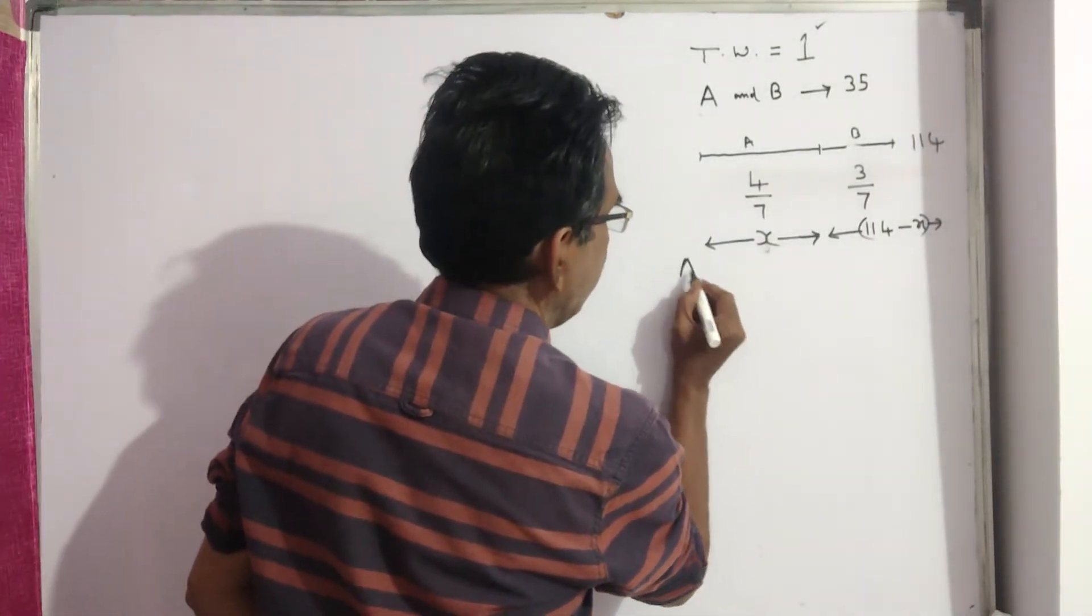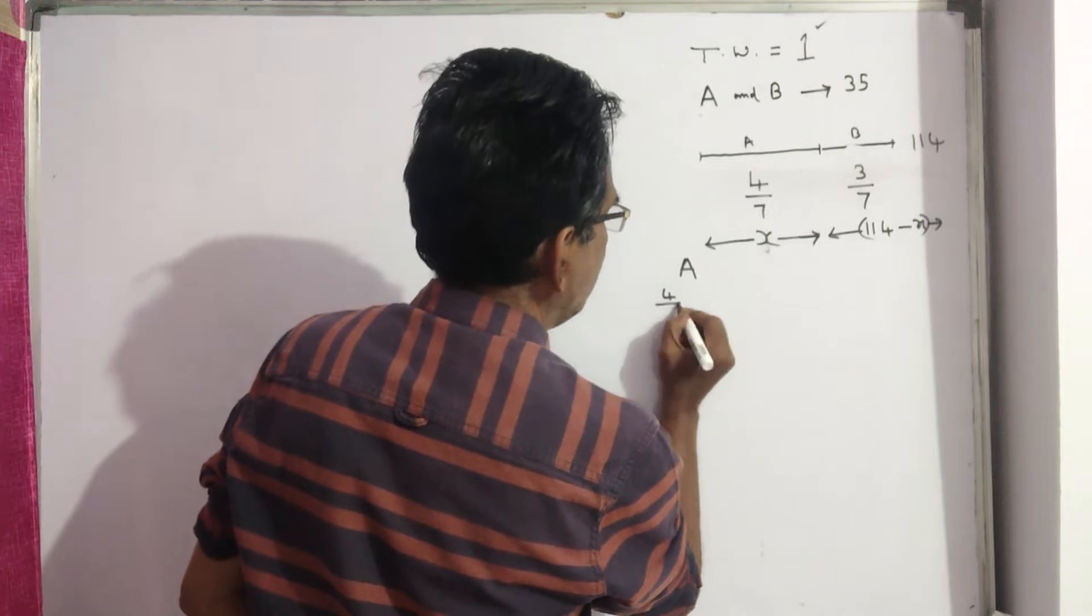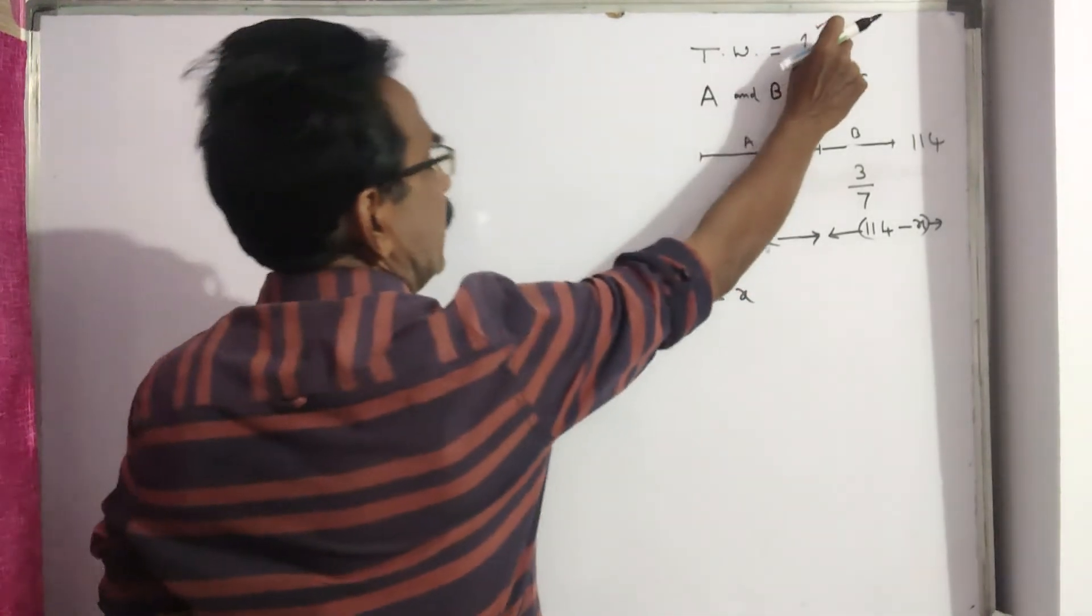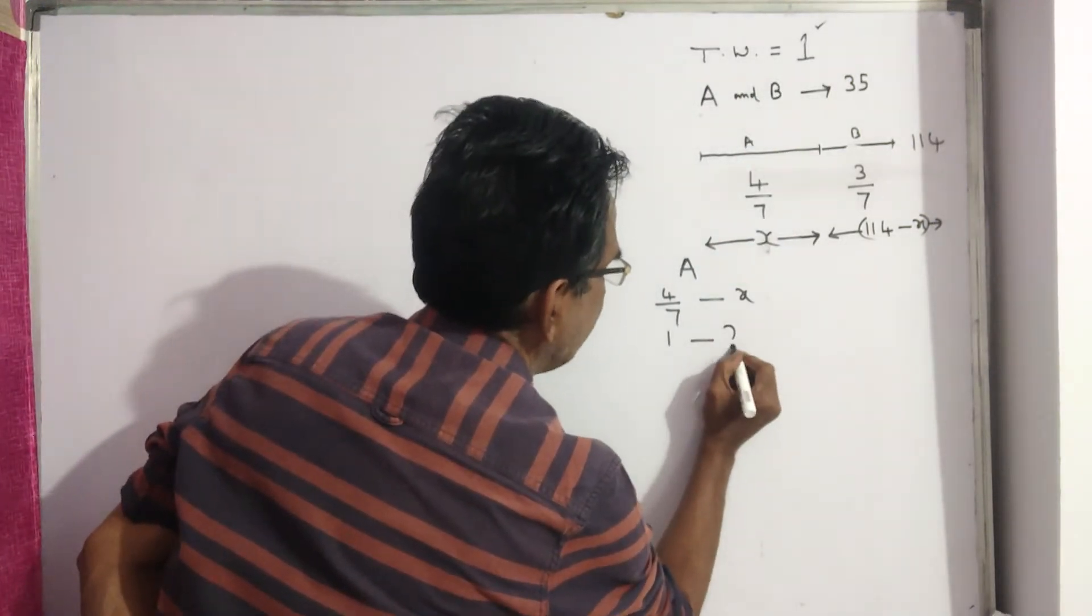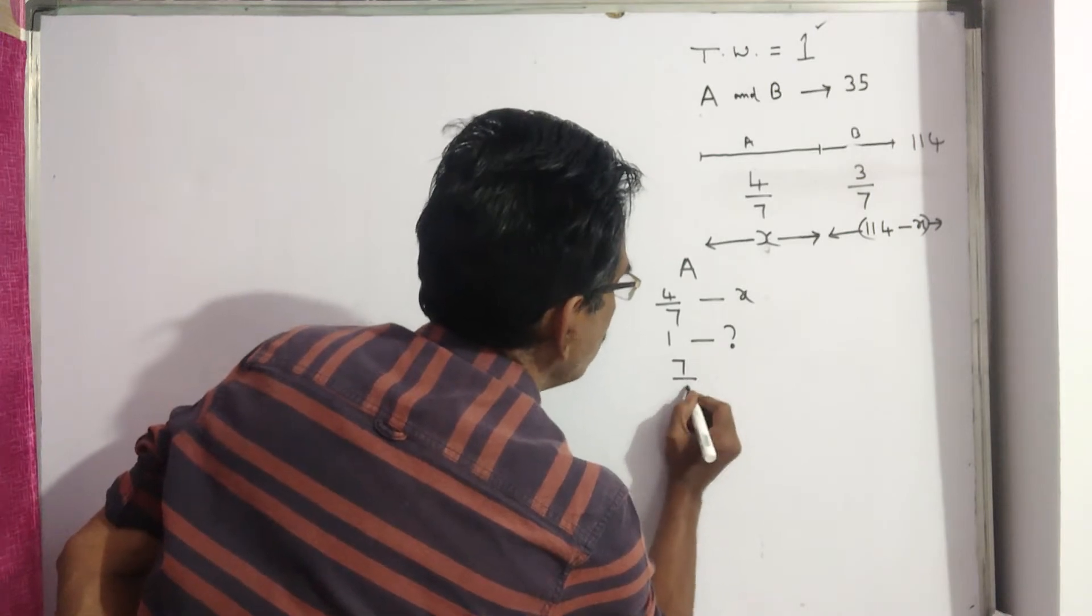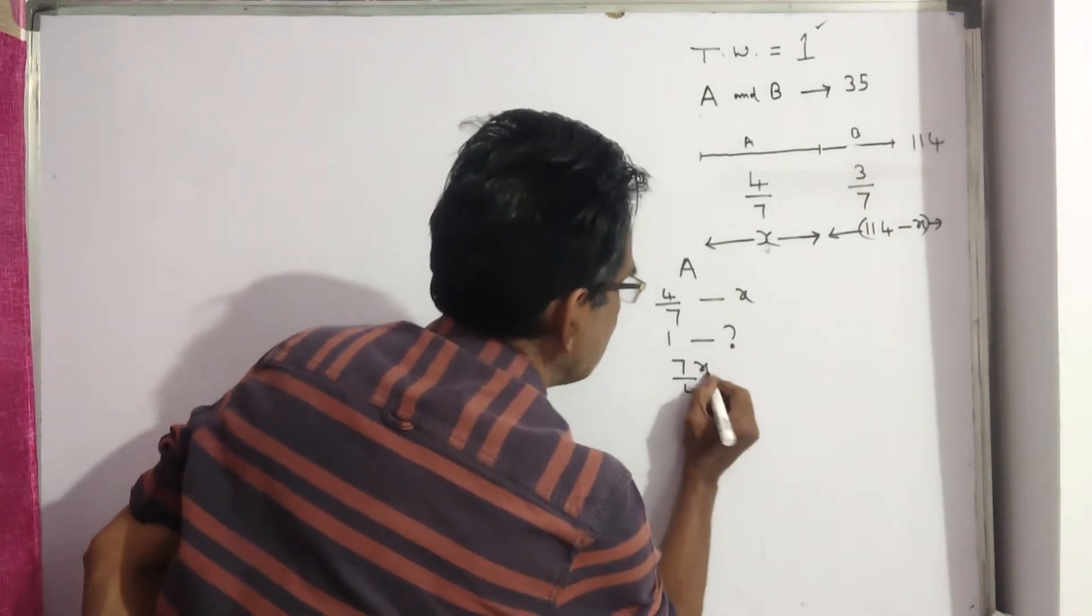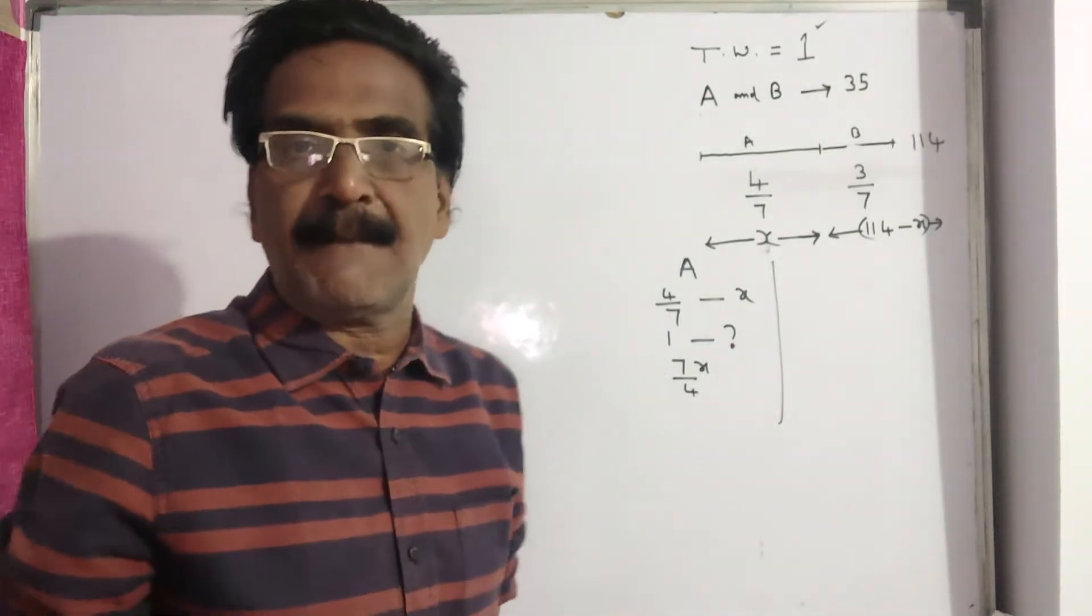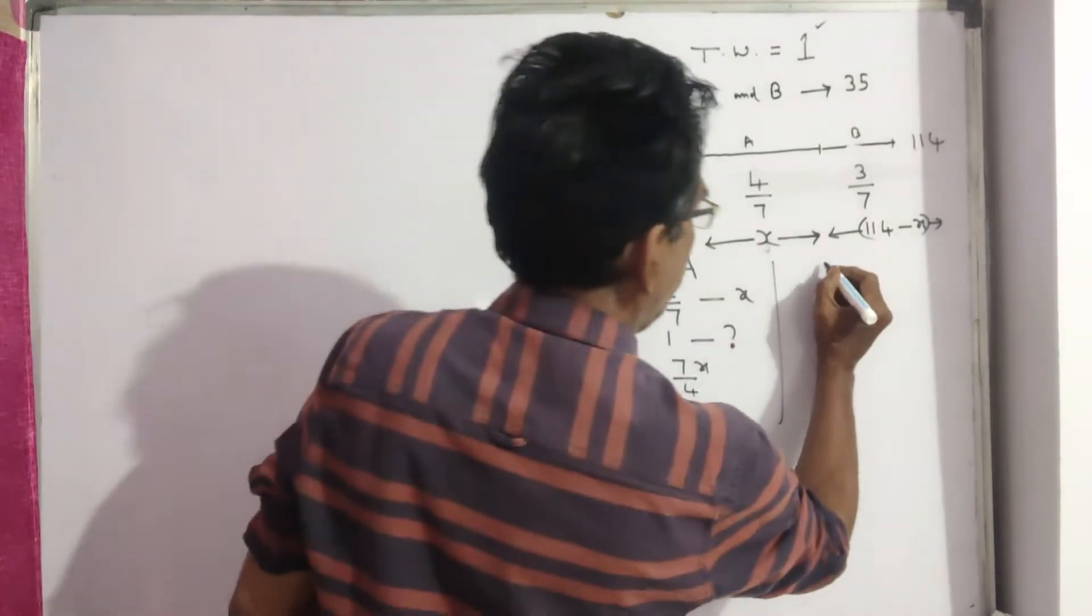Now, A completes 4 by 7 of the work in x days. So he completes the full work in 1 by 4 by 7. That is 7 by 4 into x. That is 7x by 4. So this is the number of days in which A alone can complete the work. Let us come to B.